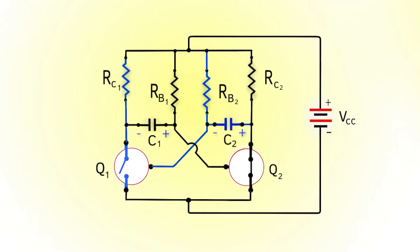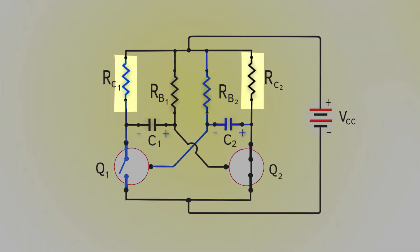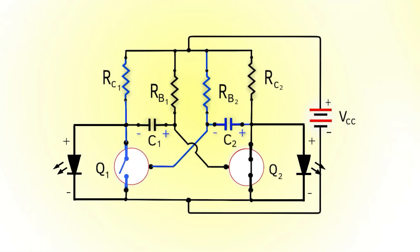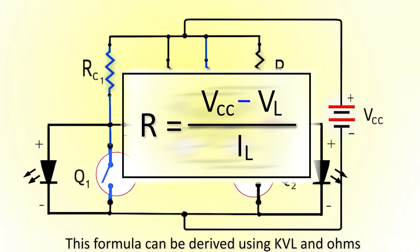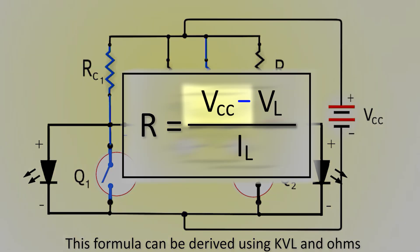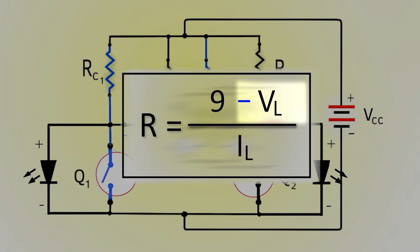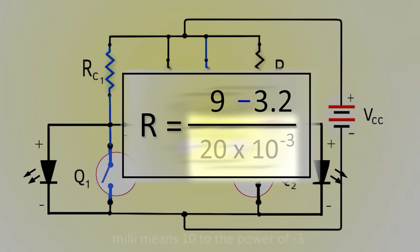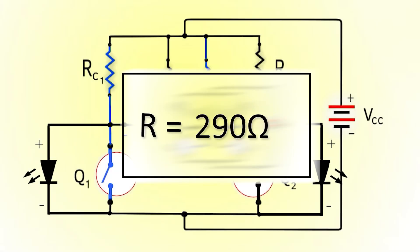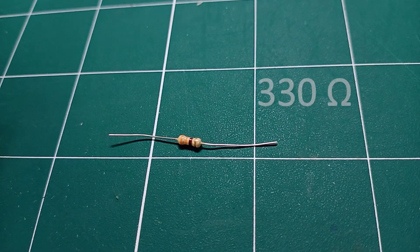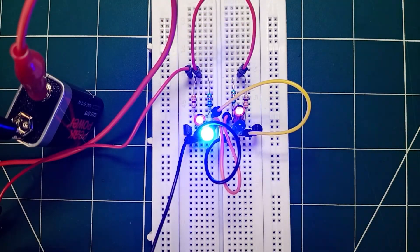Last but not least, the resistance of each collector resistor should be chosen so that it can supply appropriate current to the load, such as an LED. First, find out how much current the load takes and at what voltage. The blue LED I am using takes around 20 milliamps at 3.2 volts. Next, use this formula to find collector resistance. With a supplied voltage VCC of 9V, load voltage of 3.2V, and load current of 20 milliamps, the collector resistance equals 290 ohms. The closest value I got is 330 ohms, and this way the LEDs glow perfectly.